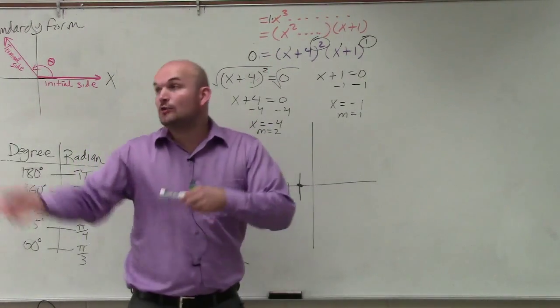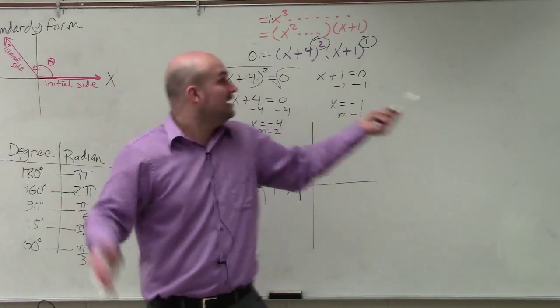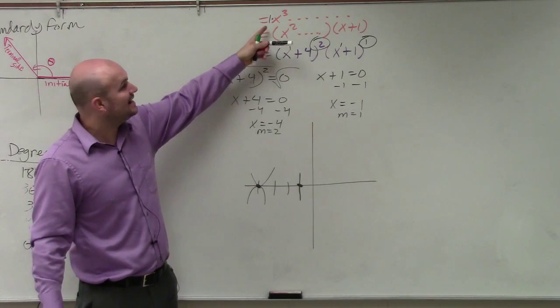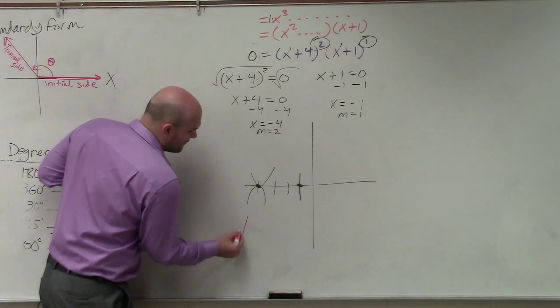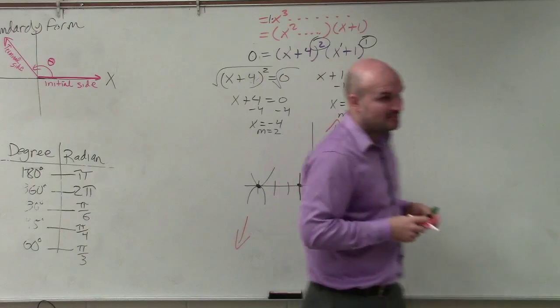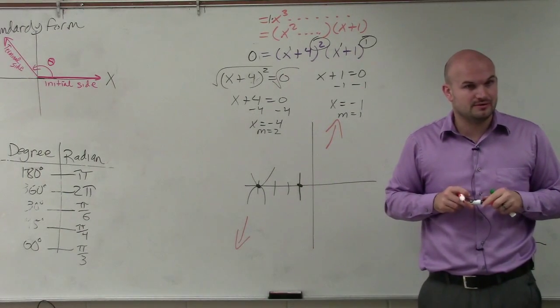So now we need to go back to 5-1 and say, all right, well, what happens when our end behavior is odd and our leading coefficient is positive? Hopefully, you remember that when it's odd and positive, the graph falls left and rises right. That's in your 5-1 notes, as far as determining the end behavior. OK?